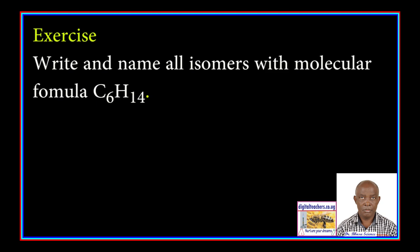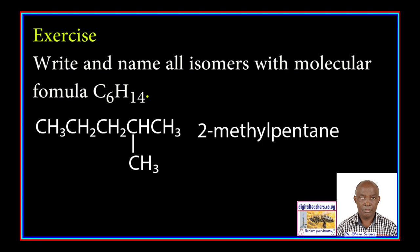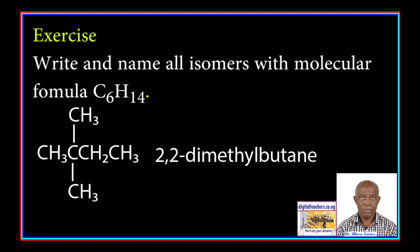Exercise: Write and name all isomers with molecular formula C6H14. You can pause and write. The isomers are: hexane, 2-methylpentane, 3-methylpentane, 2,3-dimethylbutane, and 2,2-dimethylbutane.